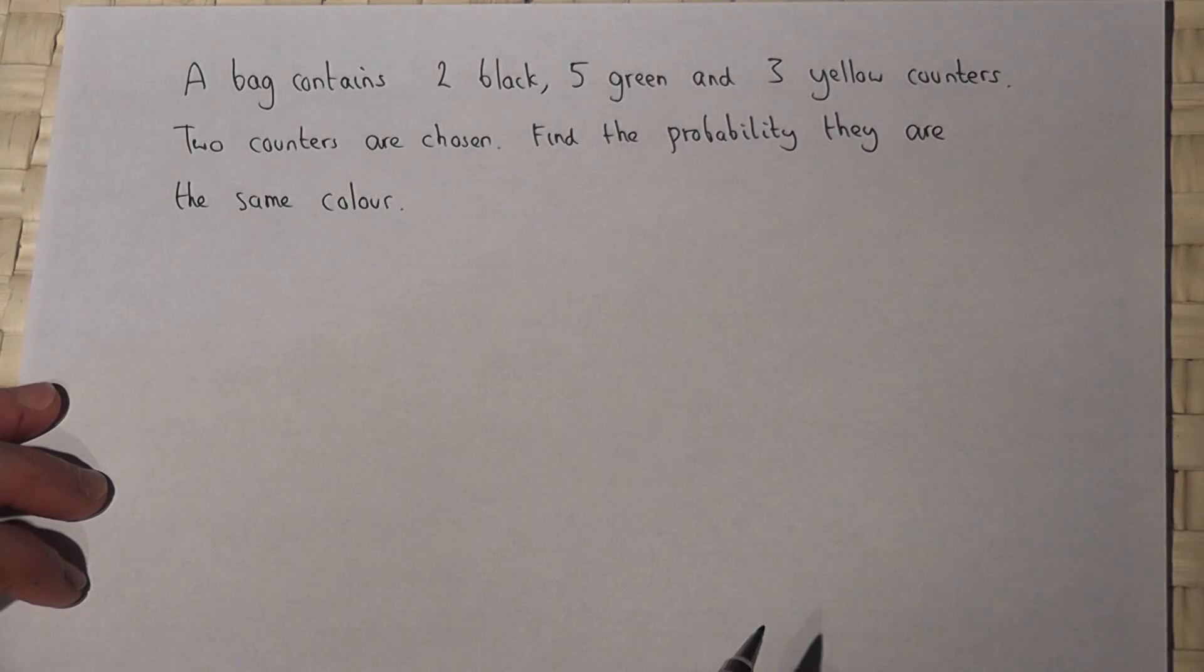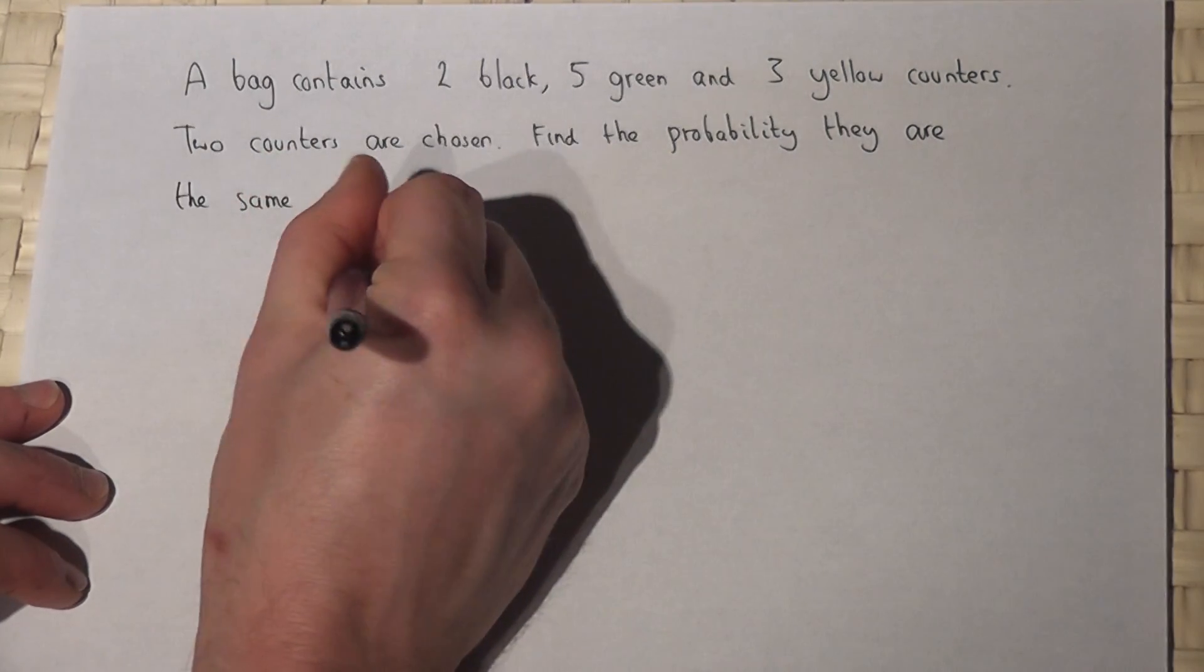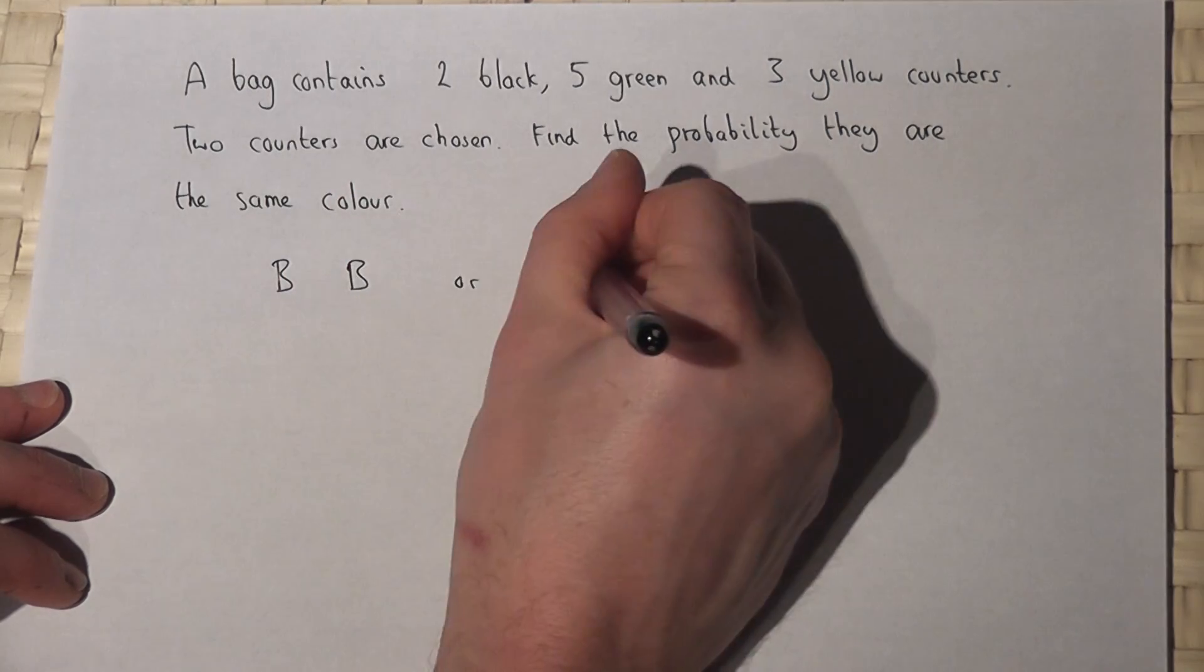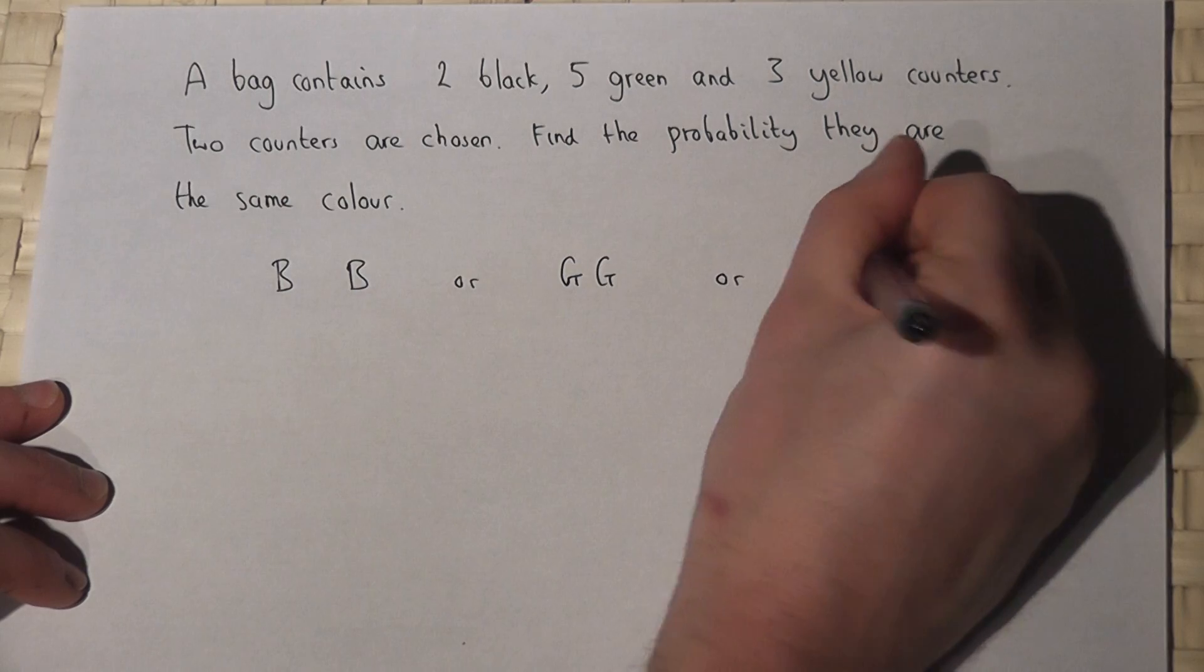This method says what are the options? Well to get the same colour it's either black black, or it's green green, or it's yellow yellow.